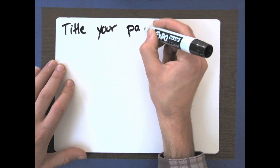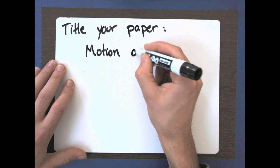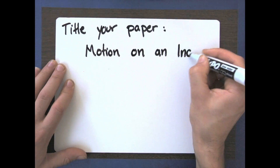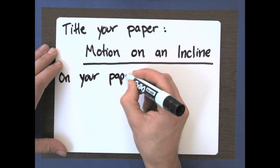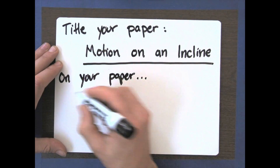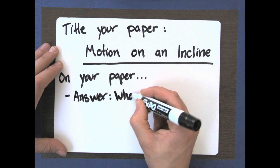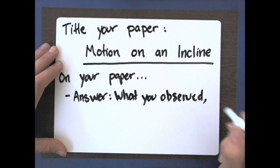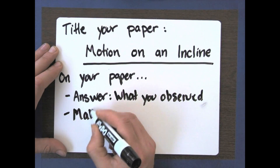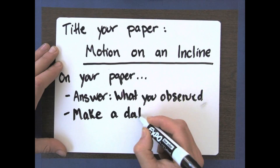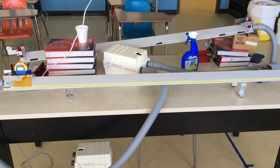This is the video for the lab on motion. On your piece of graph paper, you're going to do a couple of things. First, you're going to answer the question of what you observe when the cart goes down the track. Next, you're going to make a data table with time points and position points. And finally, you're going to make a position versus time graph.